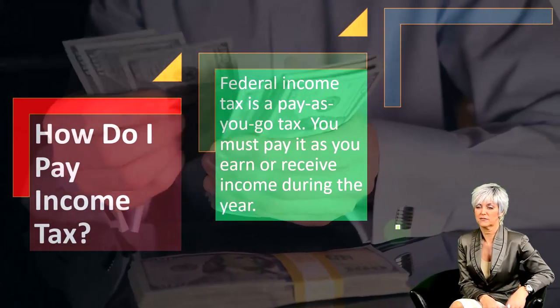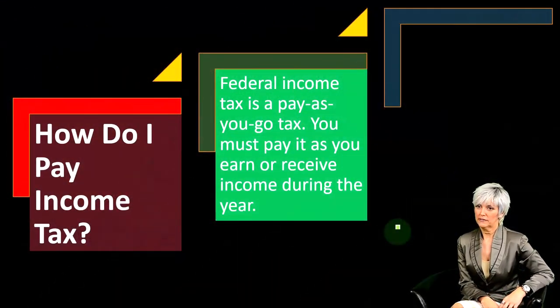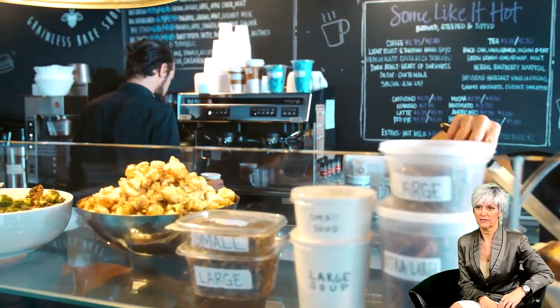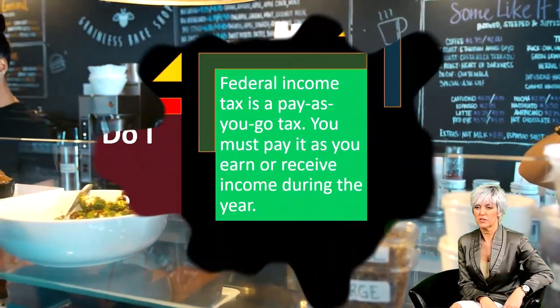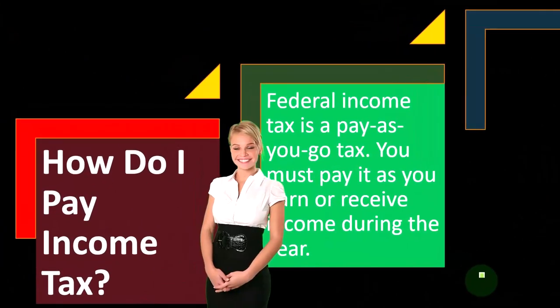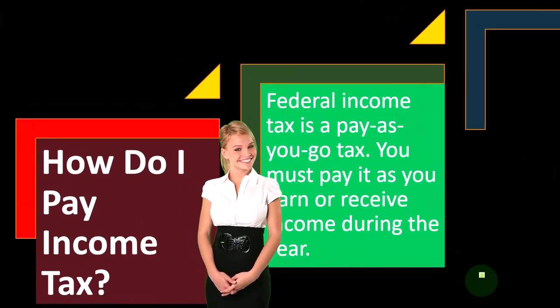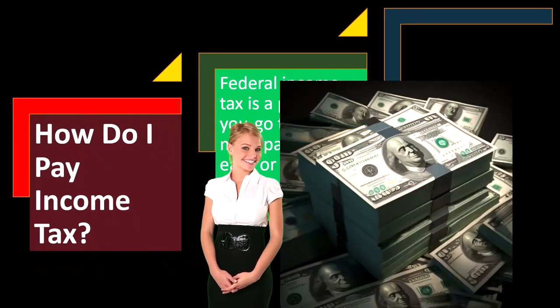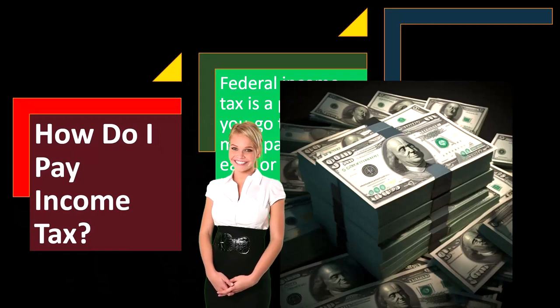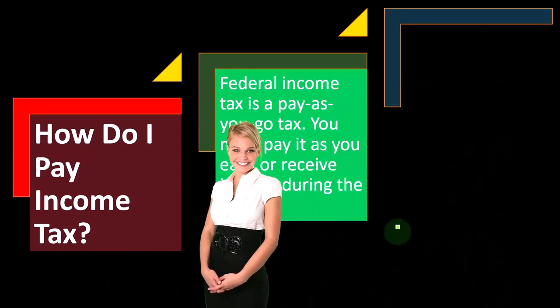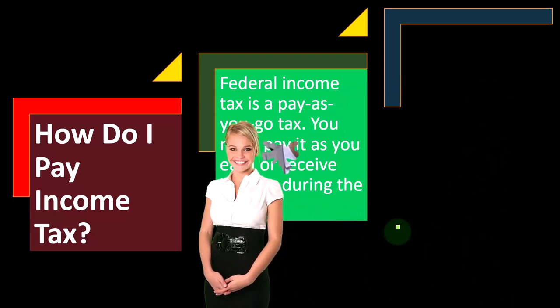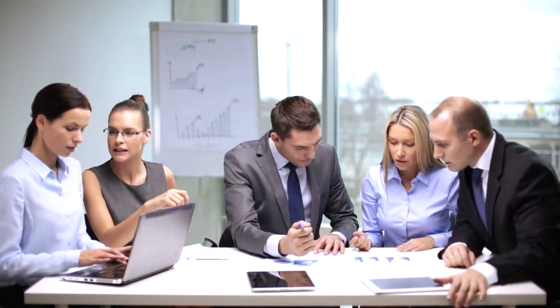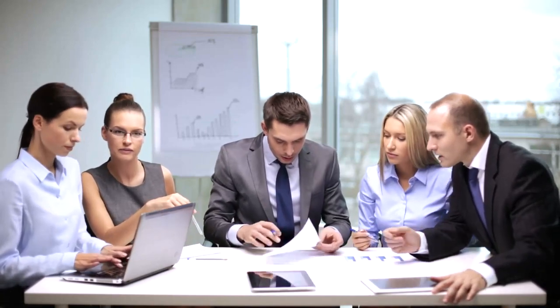How do I pay income tax? We're thinking about this question from the perspective of a small business owner, one that reports on a Schedule C. Federal income tax is a pay-as-you-go tax — you must pay it as you earn or receive income during the year. When people move from a W-2 employee situation to their own business, they are often shocked and don't fully understand this concept, in my experience.